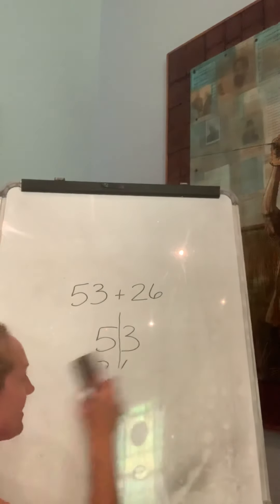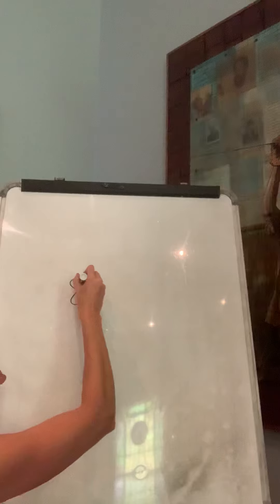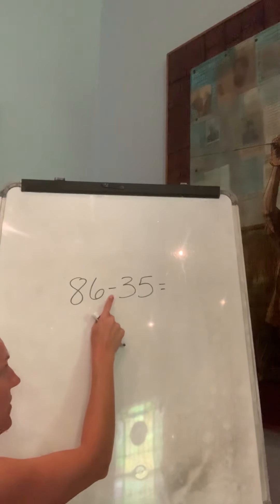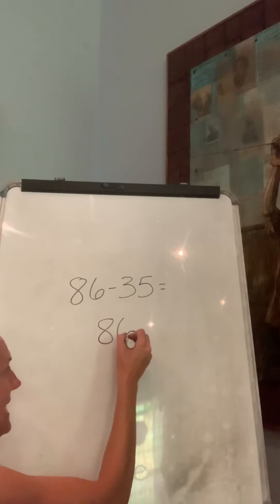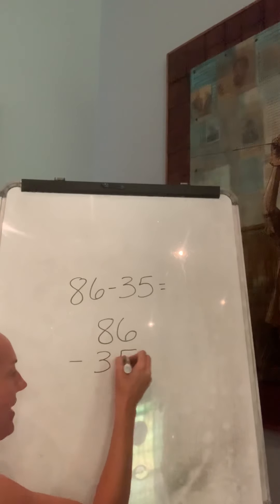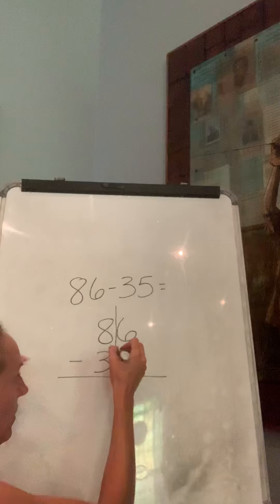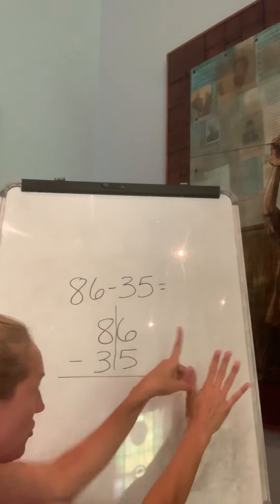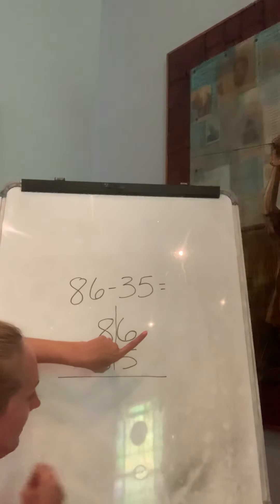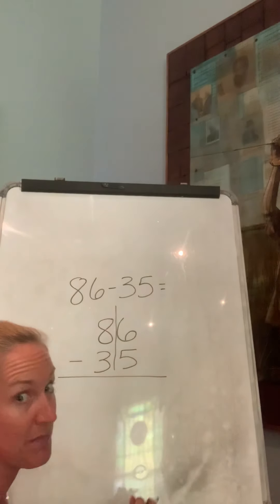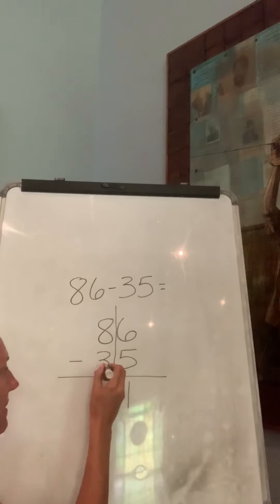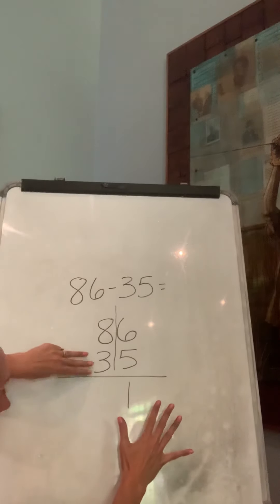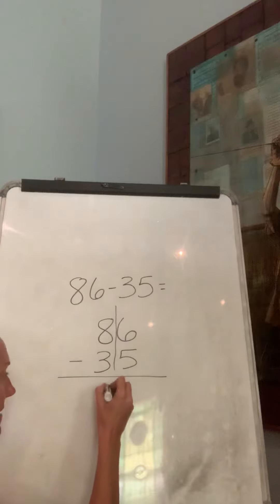Let's go to 86 minus 35. Now the first thing you want to notice is, does it say plus or minus? Make sure that you know that we're subtracting. Put them on top of each other. 86 minus 35. Well, what is 6 minus 5? Again, if you don't know it, if you don't have it memorized, you can use your fingers. 6 take away 5. Or you can use your number line and count backwards. Make sure you're going backwards for subtraction. 8 minus 3, 5, 6, 7, 8, and I'm going to take the 3 away. How much is left? 51.